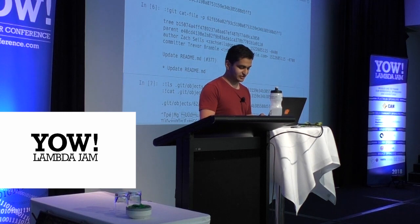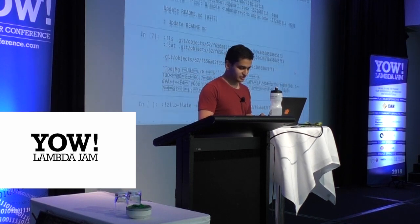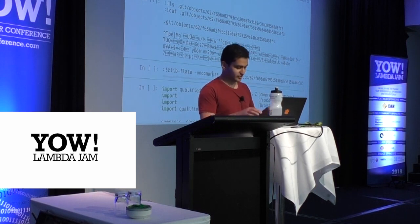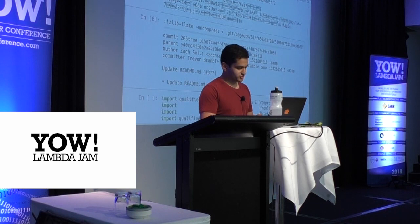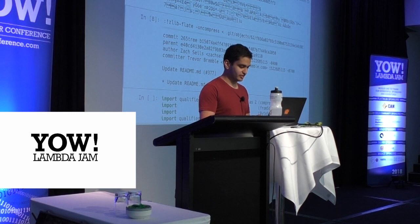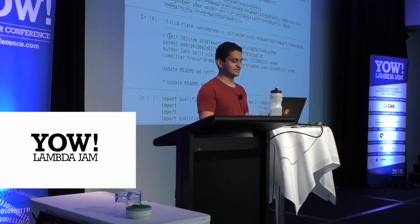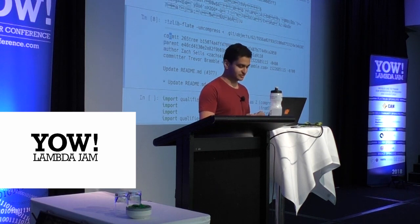The reason I get gibberish is that git uses zlib compression to compress its files. There's a command called zlib-flate I can use to uncompress the content. When I do that, I get almost exactly the same thing as before — the tree, parent, author, committer, message — but I also get an interesting header that tells me the type of object, the length of the object, and a null byte.